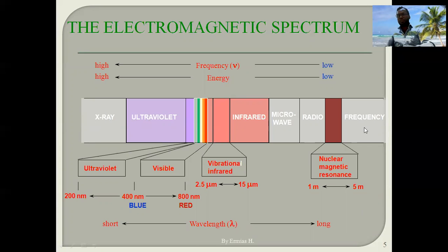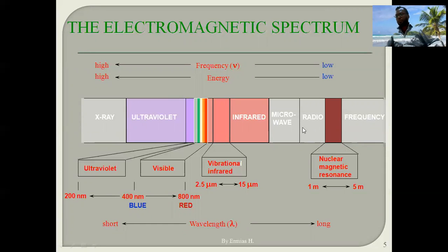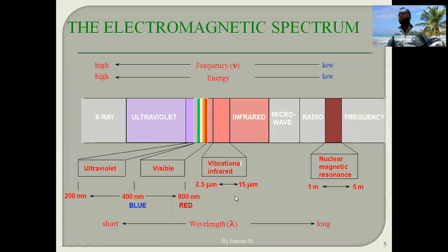The electromagnetic spectrum was discussed in Chapter One, ranging from X-ray to the radio frequency region. Today we focus on the infrared region, which lies between the visible and microwave regions, spanning approximately 2.5 micrometers up to 20 or 25 micrometers.